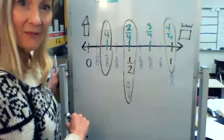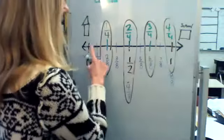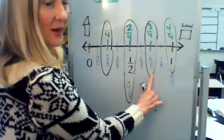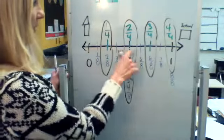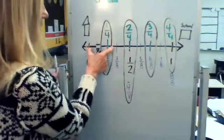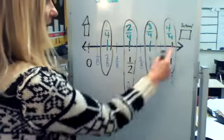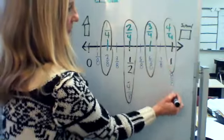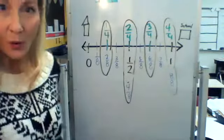Do you see any more? Three fourths of the way is the same as saying six eighths of the way — just smaller parts. If I have eighths, they're a little bit smaller parts; fourths are a little bit larger parts. And you might have also seen that eight eighths is the same as one whole.